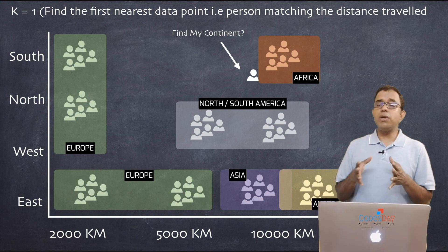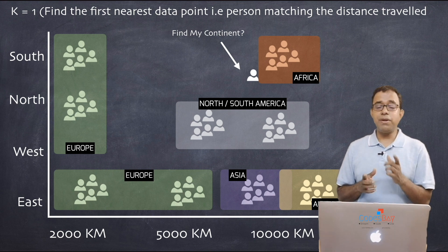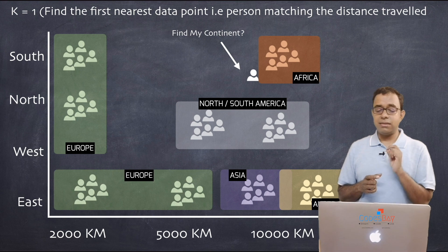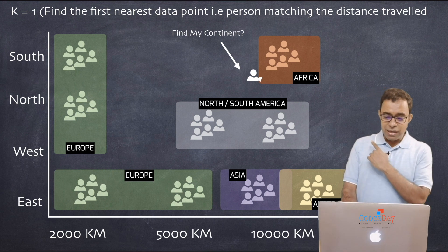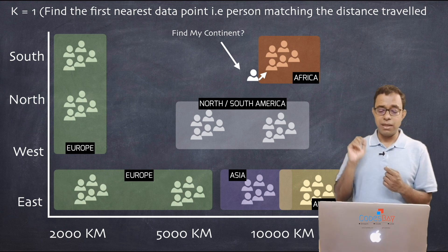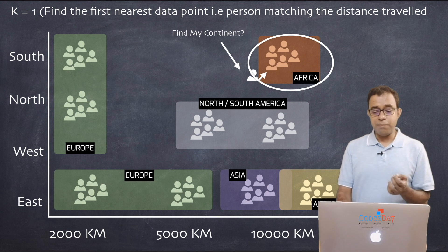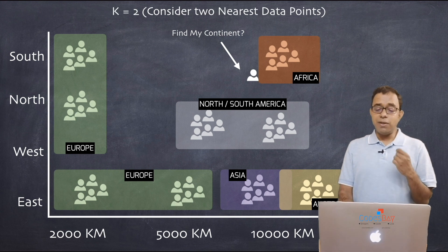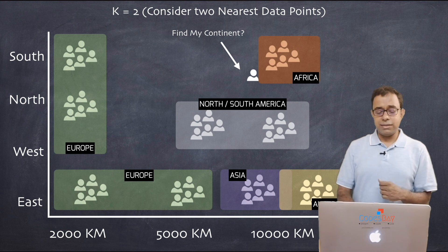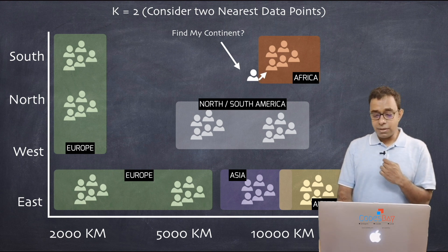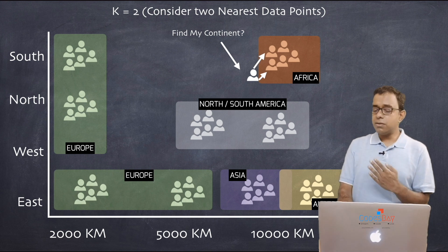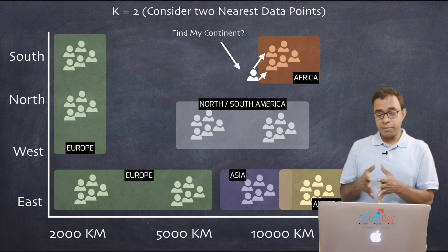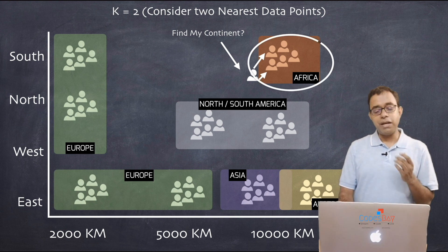Let's try K equal to 1. K equal to 1 means find the single nearest data point — the person matching the distance traveled. From the visual reference you can see that the nearest person is in Africa, so the result is that this person is traveling from Africa. Now with K equal to 2, we consider two nearest data points. Both the first and second nearest data points are in Africa, so this person is also traveling from Africa.